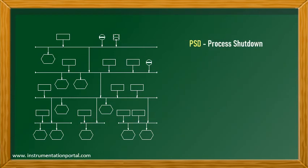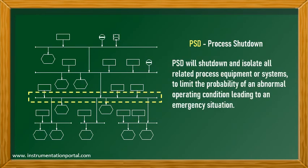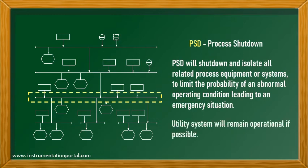The next level is PSD, or process shutdown. PSD will shut down and isolate all related process equipment or systems to limit the probability of an abnormal operating condition, which can lead to an emergency situation. However, utility systems will remain operational if possible.